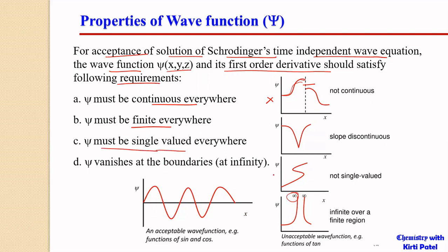Psi must be single-valued everywhere — it should not give multiple values for a single x value. For a single position x, there can be only one ψ value. In one particular position, the particle has the same probability — it cannot be 50%, 75%, and 100% simultaneously for the same particle at the same space and time. This means ψ should always be single-valued. Additionally, ψ should vanish at the boundaries — at infinity it should become 0, not infinite. So these four conditions must be satisfied.